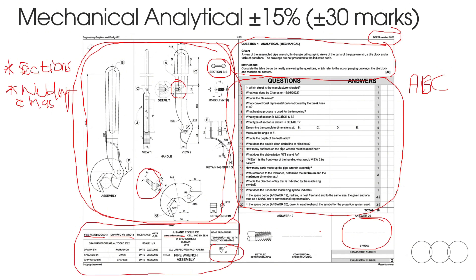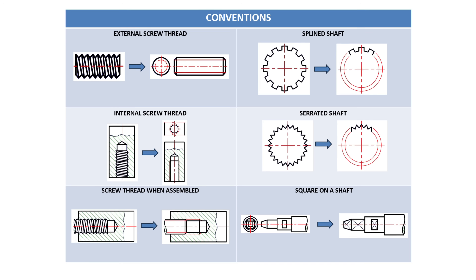They are also going to ask you to draw some sort of conventional drawing — that is my third tip. Go through the conventional drawings of mechanical parts. They will give you the drawings on the left and you need to draw them in their most simple form, which are the drawings on the right. Work through these to make sure you are able to draw every mechanical part they can ask.